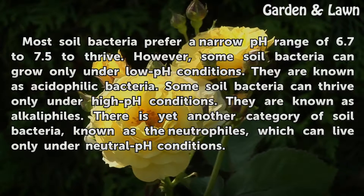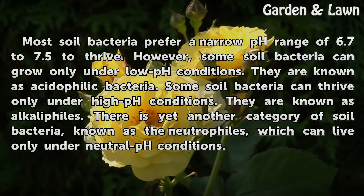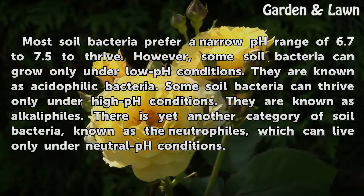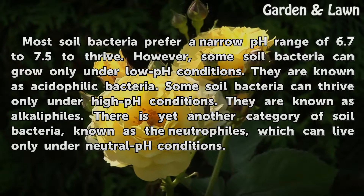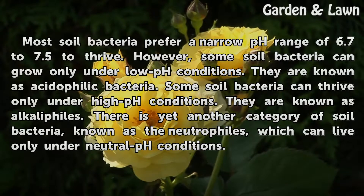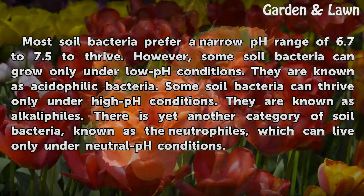Most soil bacteria prefer a narrow pH range of 6.7 to 7.5 to thrive. However, some soil bacteria can grow only under low pH conditions. They are known as acidophilic bacteria.